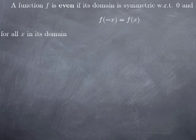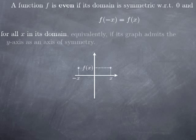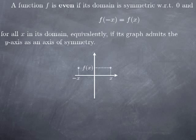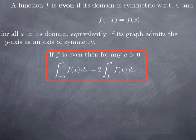When we talk about odd functions, we have the dual notion of even functions. Recall that a function is even if its domain is symmetric with respect to the origin and plugging negative x in gives the same value as f of x. Geometrically, the y-axis is an axis of symmetry for the graph. This gives us that if you integrate an even function on an interval centered at the origin, you obtain 2 times the integral from 0 to a.